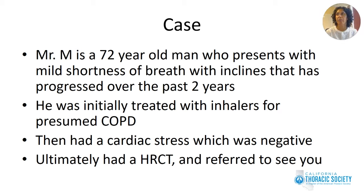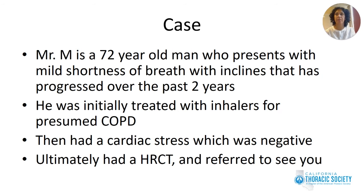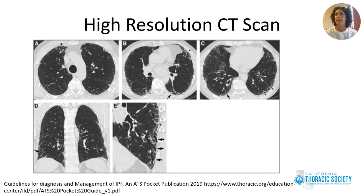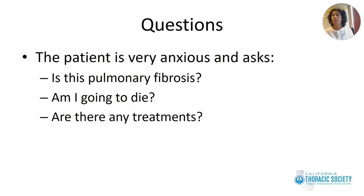I'm going to start with a case that may be familiar to you: Mr. M, a 72-year-old gentleman who noted increasing mild shortness of breath with inclines over the past two years. He went to see his primary care doctor and was initially treated with inhalers for presumed COPD. When that didn't work, he was referred to a cardiologist and had a stress test, which was negative. Ultimately, he had a high-resolution CT scan and was referred to clinic. When you review the images, you see areas of reticulation as well as traction bronchiectasis on the subpleural and basilar parts of the lung. Mr. M presents to clinic and asks: is this pulmonary fibrosis? He googled it and it says his life expectancy is three to five years. Is that true? Am I going to die of this?